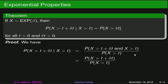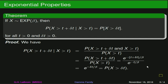Since t and delta t are both positive, if x is greater than t plus delta t, it is clearly greater than t. So we can drop that second condition, and our probability just becomes the probability that x is greater than t plus delta t, divided by the probability that x is greater than t. Using the cumulative distribution function, the probability that x is greater than t plus delta t is e to the negative (t plus delta t) over beta, and the probability that x is greater than t is e to the negative t over beta. Simplifying, we end up with e to the negative delta t over beta, which is the probability that x is greater than delta t.